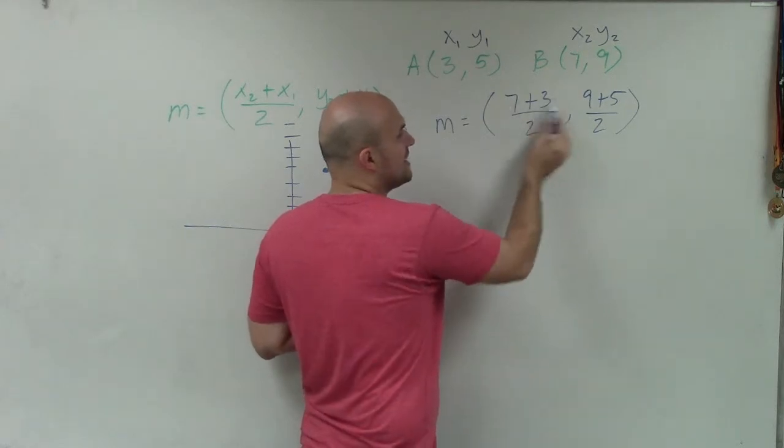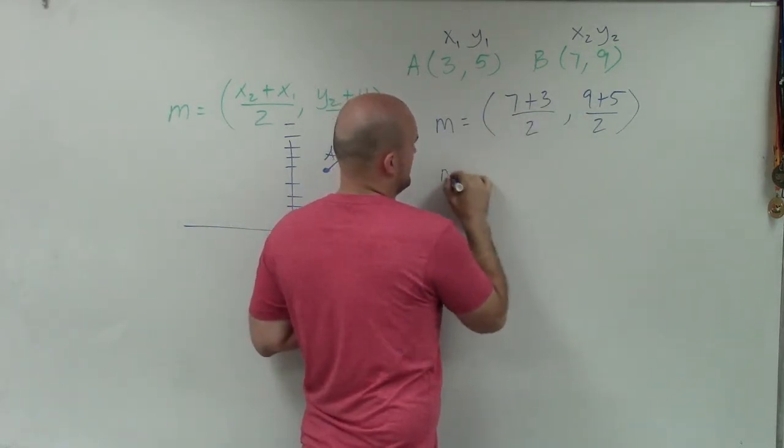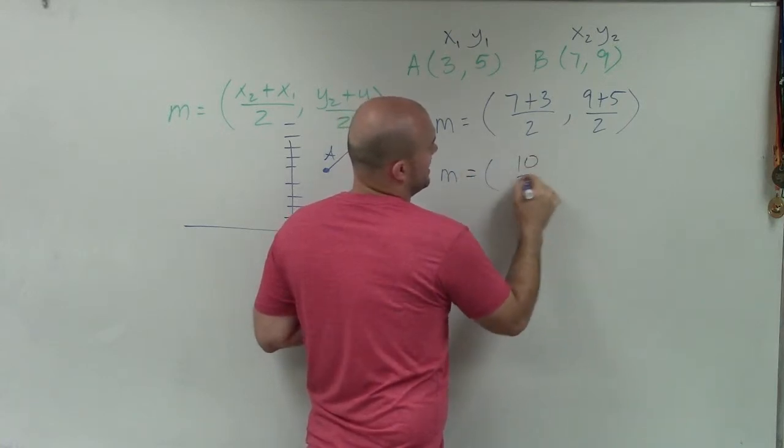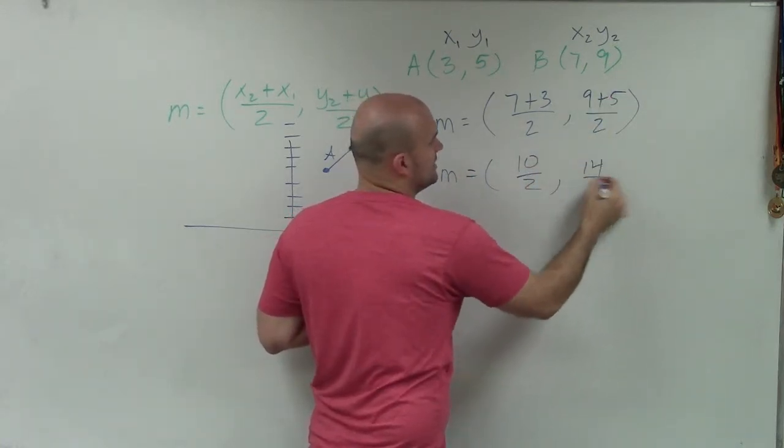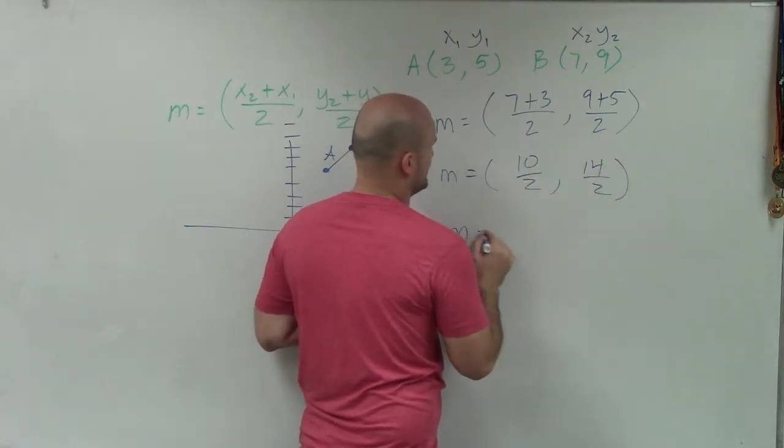So to simplify this, I'm going to add my numerators first. And then I'll divide by 2. So 7 plus 3 is going to be 10 divided by 2. 9 plus 5 is going to be 14 divided by 2. And now, since these are both even numbers, I can divide 2 into there to simplify.